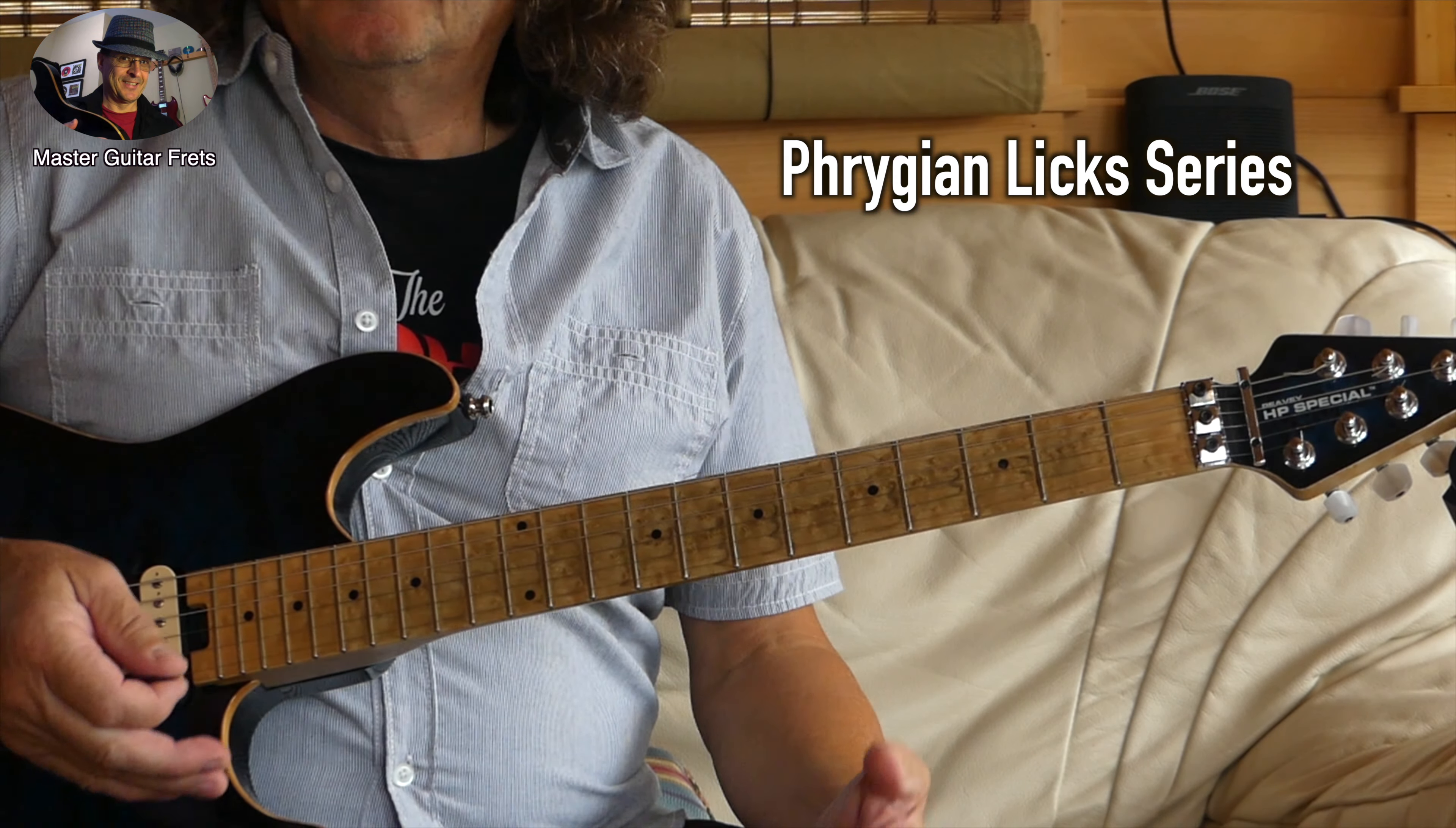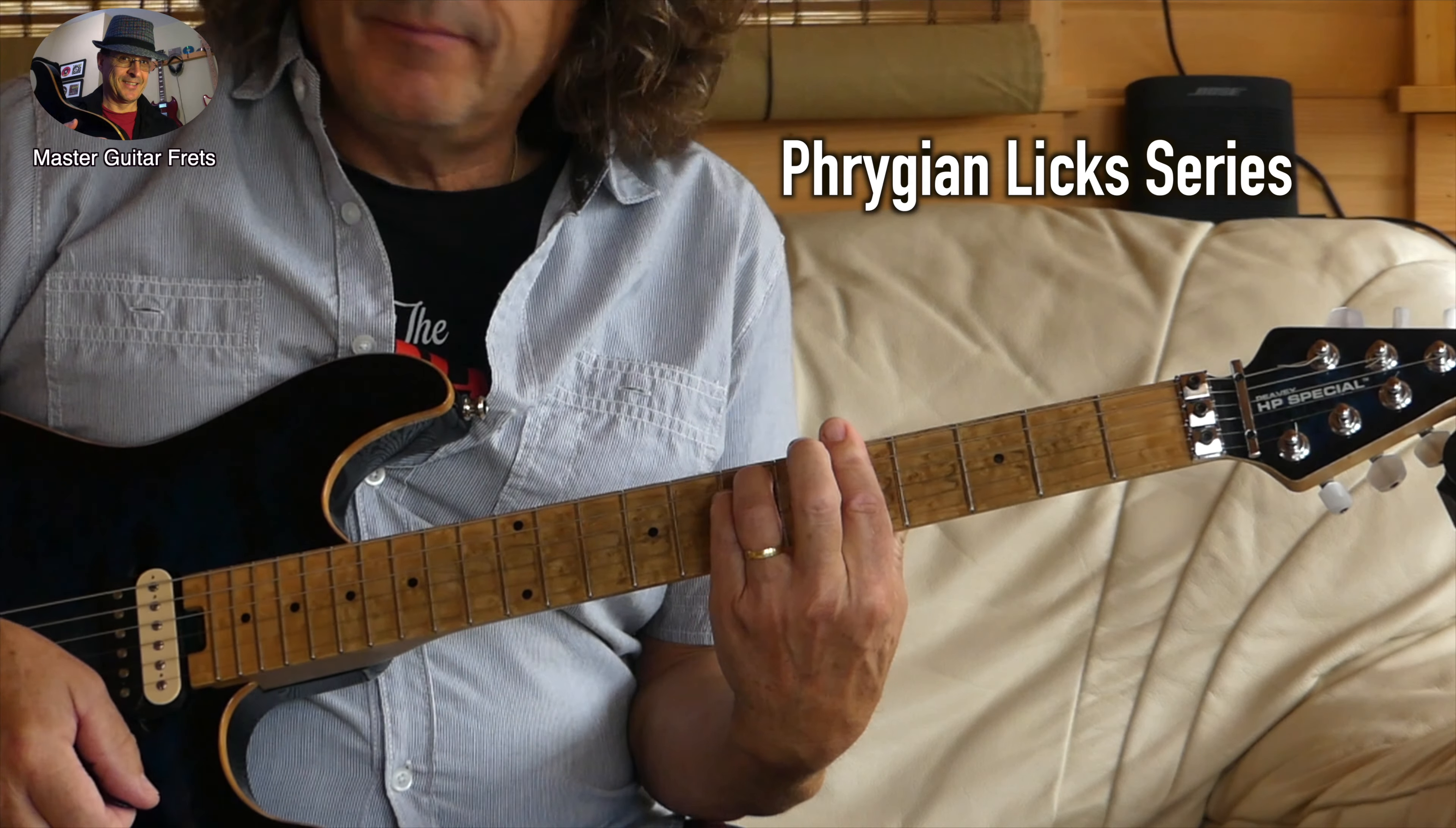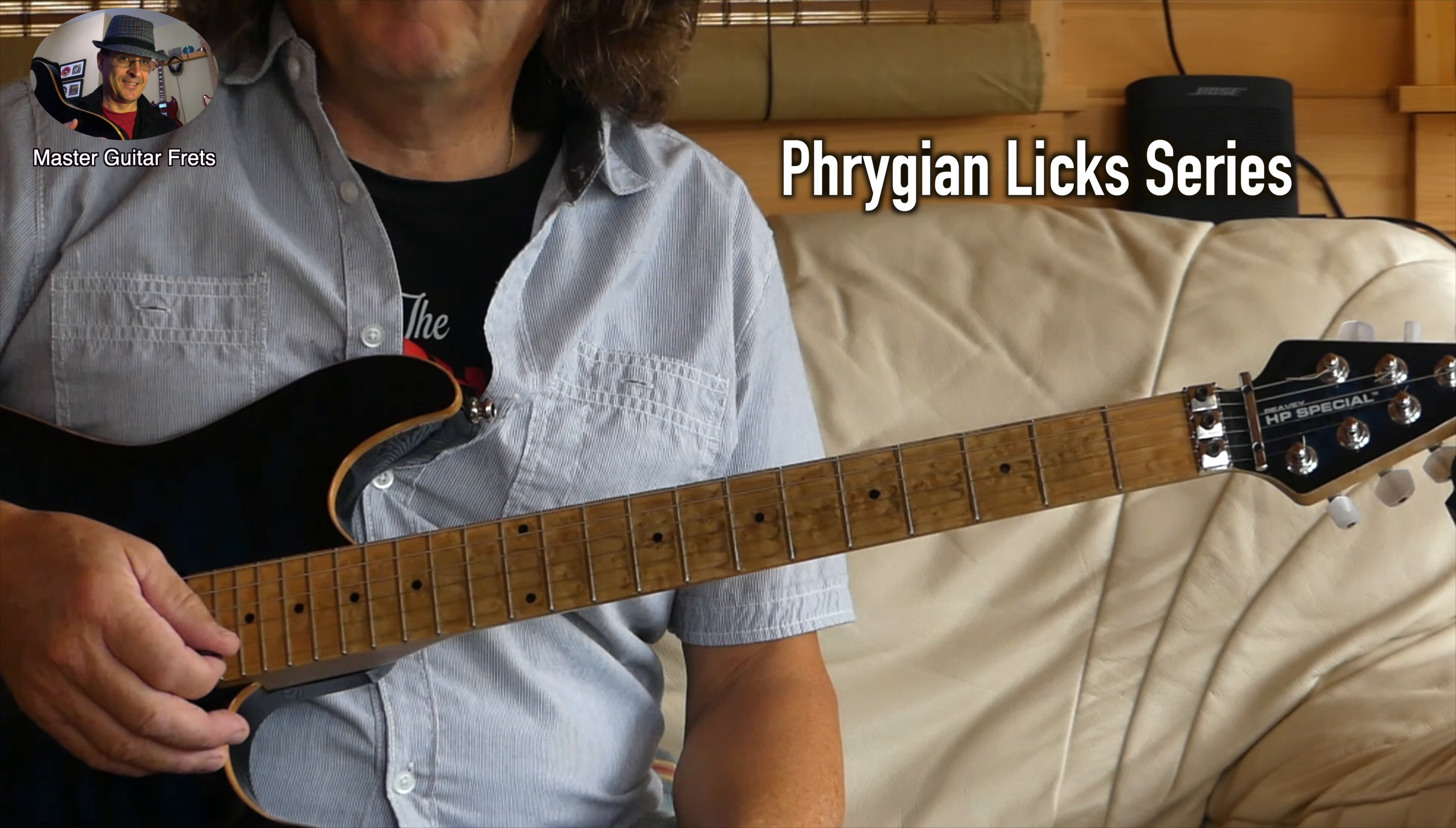Obviously the Phrygian mode is a minor mode, so this solo is in A minor and the progression is A minor and A sharp, and it goes back and forth. Very simple, and a nice little funky beat to it.